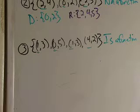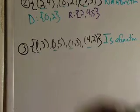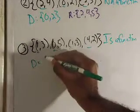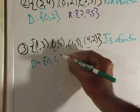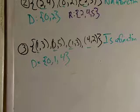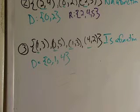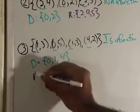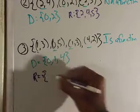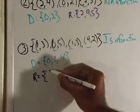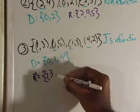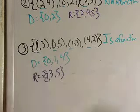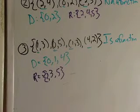What's the domain? Just the collection of the x values: 0, 1, and 4. What is your range? The collection of the y values: 2, 3, and 5.